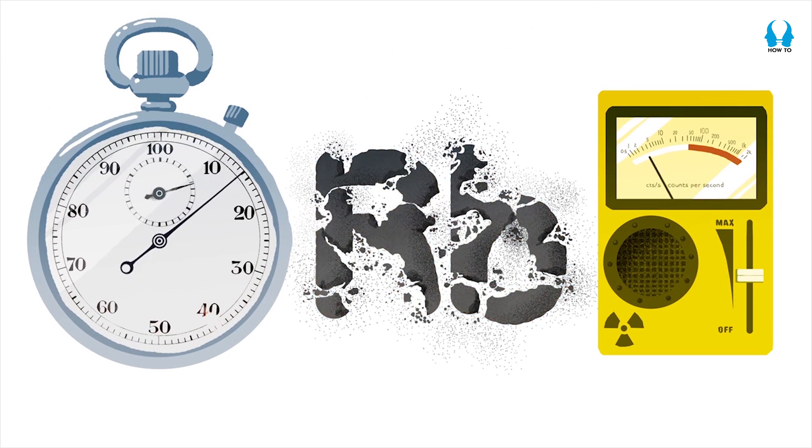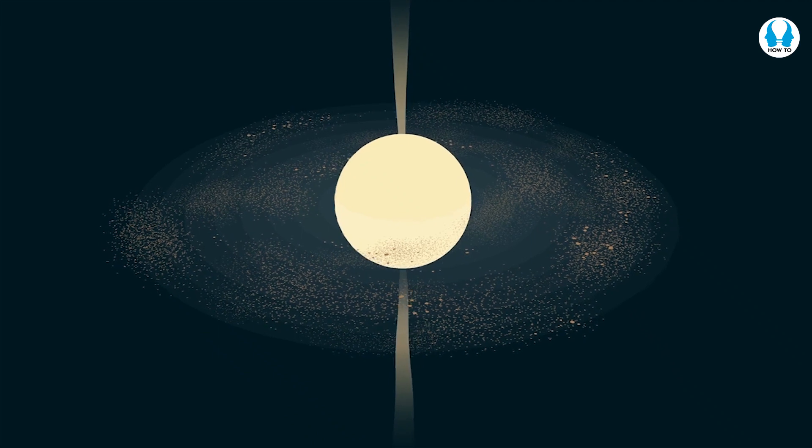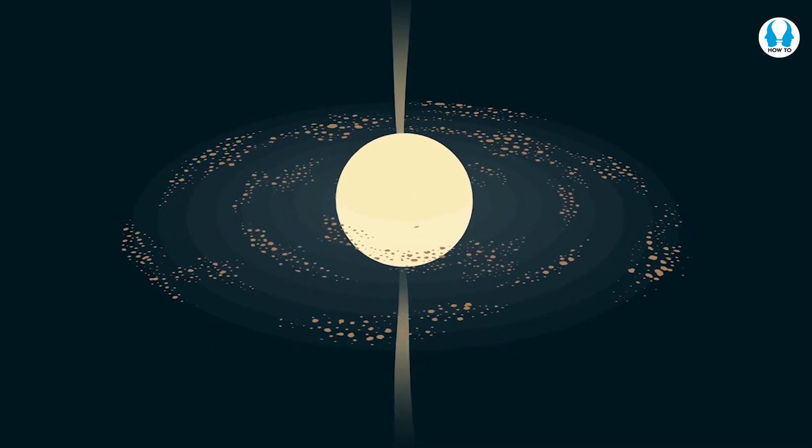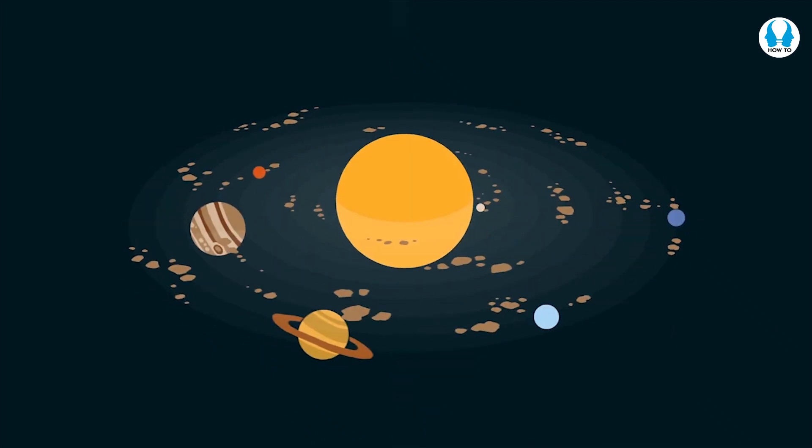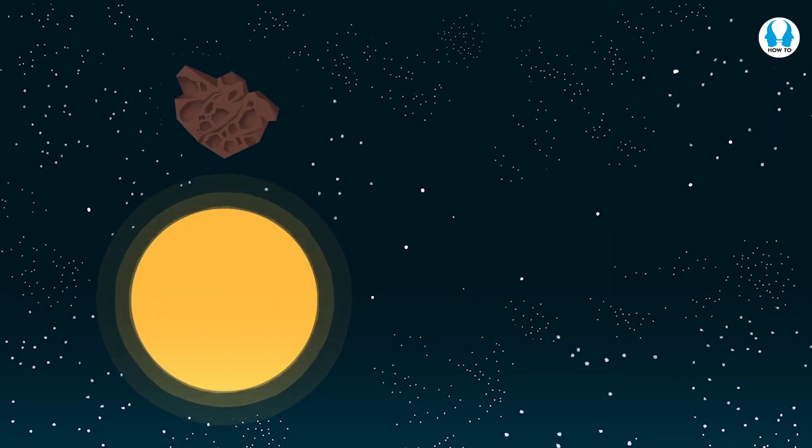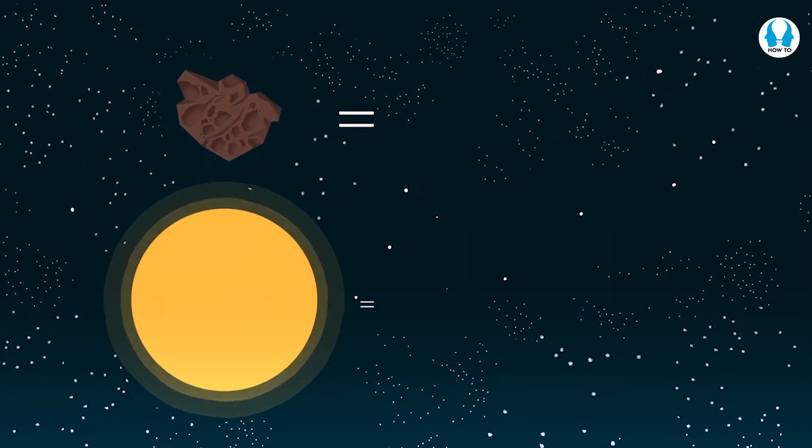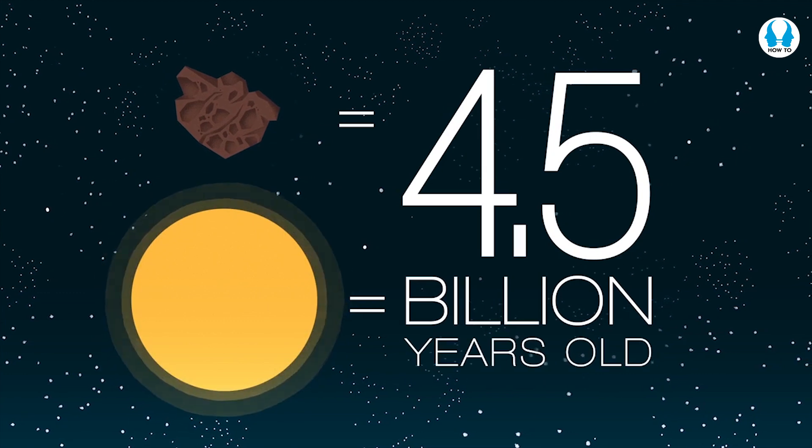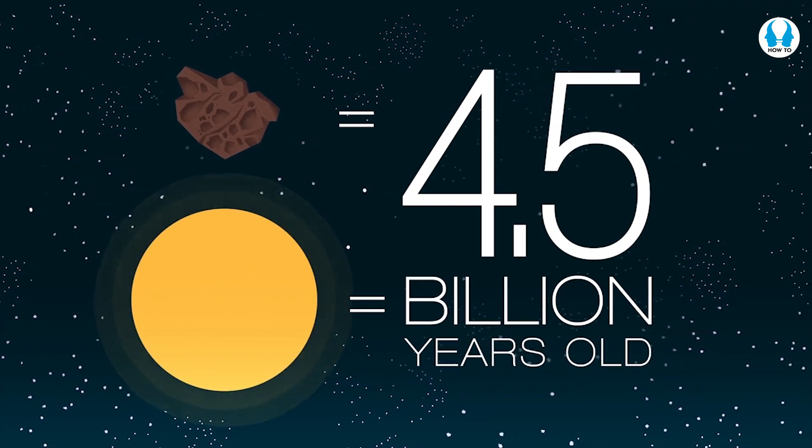But how does this help us find the age of the Sun? Well, the Earth, the planets, comets and moons all formed at the same time as the Sun. So, space rock rubidium tells us the Sun is four and a half billion years old. But what does this number mean?